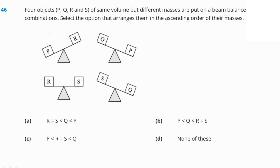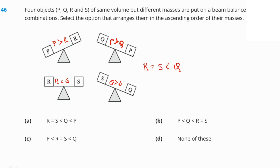Four objects P, Q, R, and S of the same volume but different masses are placed on a beam balance. From the balance: R equals S in mass, P is heavier than R, P is heavier than Q, and Q is heavier than S. The correct ascending order is R=S < Q < P. Option A is our right answer.